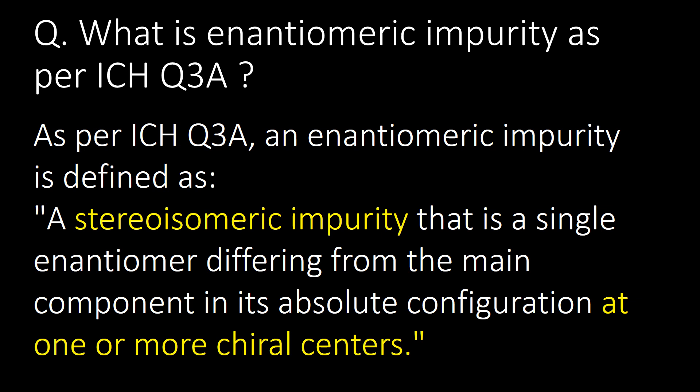What is an enantiomeric impurity as per ICH Q3A? As per ICH Q3A, an enantiomeric impurity is defined as a stereoisomeric impurity that is a single enantiomer differing from the main component in its absolute configuration at one or more chiral centers.